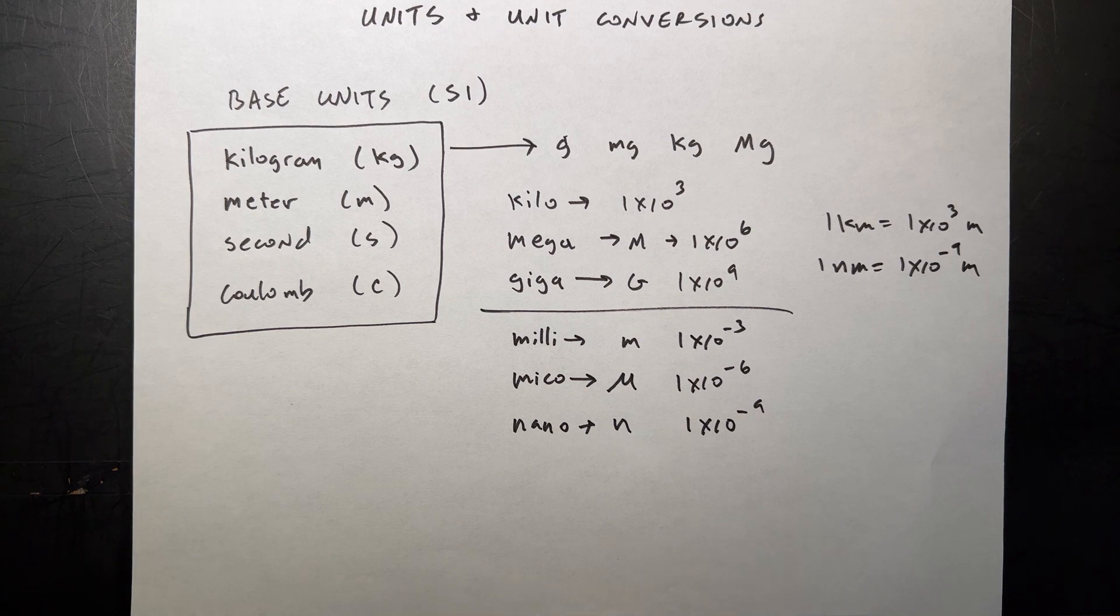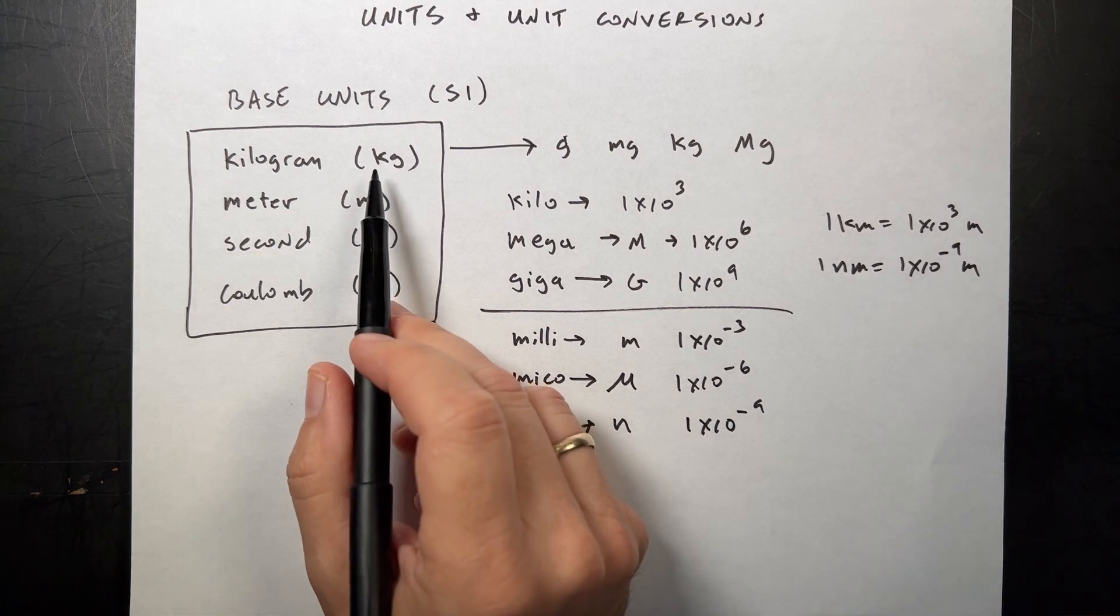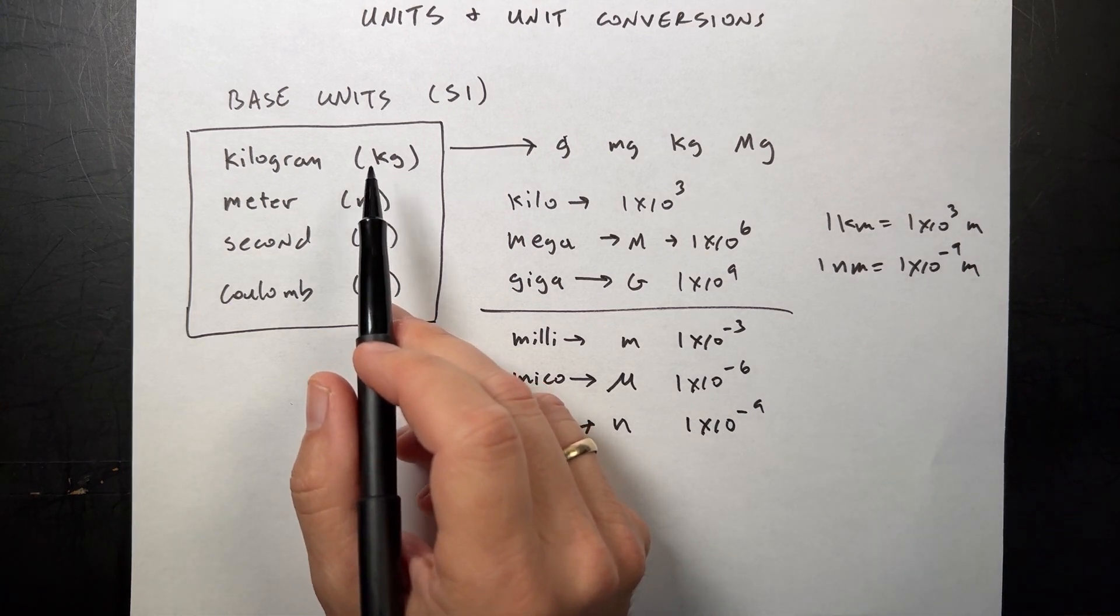A kilometer would be one kilometer is one times ten to the third meters. One nanometer is one times ten to the negative ninth meters. Okay, so that's how that unit works. You can have a nanosecond, millisecond, nanocoulomb. You can put it with any of these. And you see here, like I said, we already have it in our base units. We have the K, the kilo.